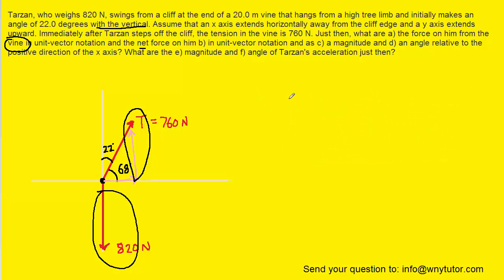Now for part C it is going to be useful to write the net force into a sort of triangle. Now we recall that in the x direction we had a force of positive 285 newtons.